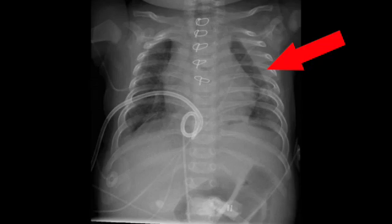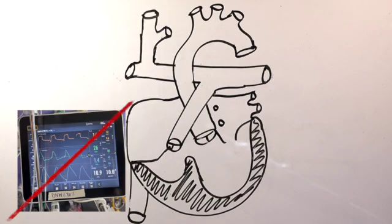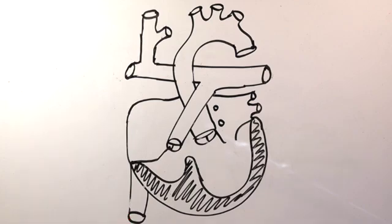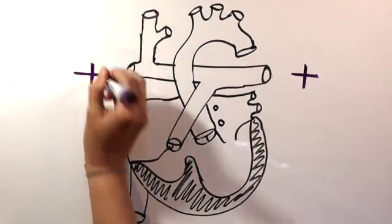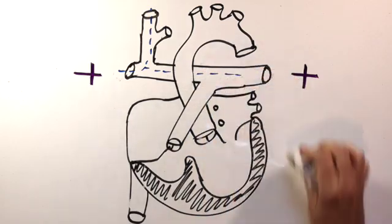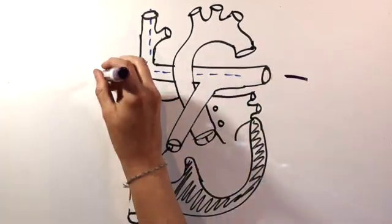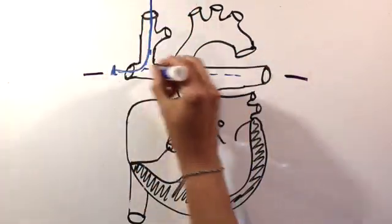So lowering PA pressure after surgery should help. The first step is to extubate as soon as possible, preferably in the operating room. Positive pressure ventilation increases pulmonary artery pressures and will decrease flow through the Glenn. Spontaneous breathing creates a negative pressure in the lungs, drawing blood into the pulmonary arteries.